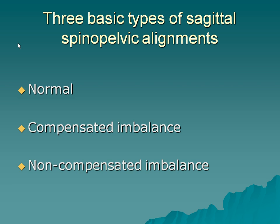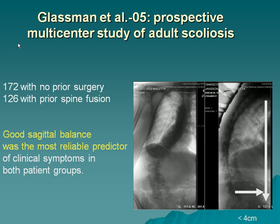There are three basic types of sagittal spinopelvic alignments: the normal alignment, which is actually pretty unusual; compensated imbalance, which is the typical presentation; and non-compensated imbalance.